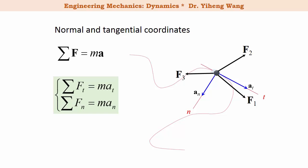Remember, when studied using normal and tangential coordinates, motion only occurs within an osculating plane. Therefore, there is no motion along the binormal direction, which is the direction perpendicular to the n-t plane. Therefore, the resultant force along the binormal direction is always zero.